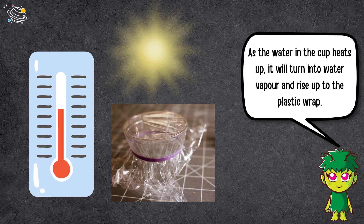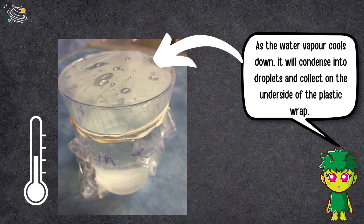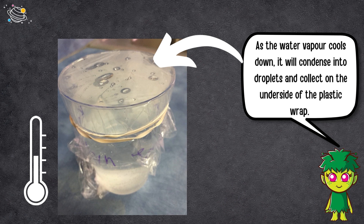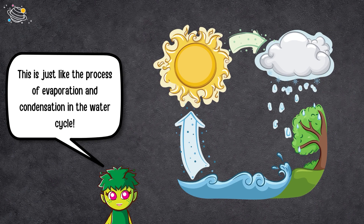Next, place the cup in direct sunlight for a few hours. As the water in the cup heats up, it will turn into water vapor and rise up to the plastic wrap. As the water vapor cools down, it will condense into droplets and collect on the underside of the plastic wrap. This is just like the process of evaporation and condensation in the water cycle.